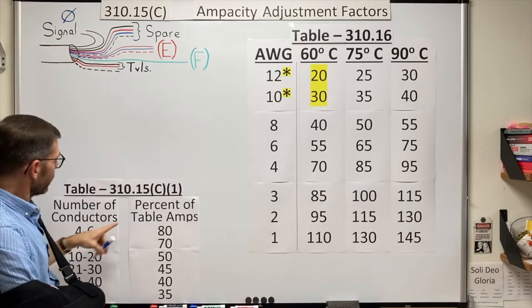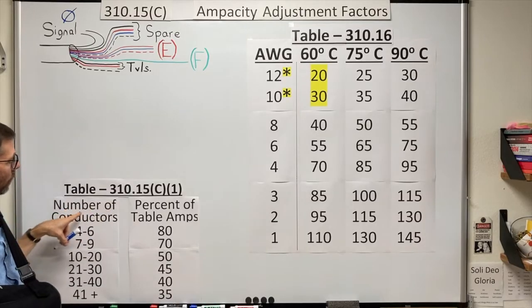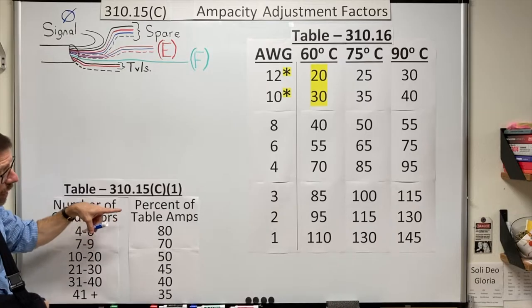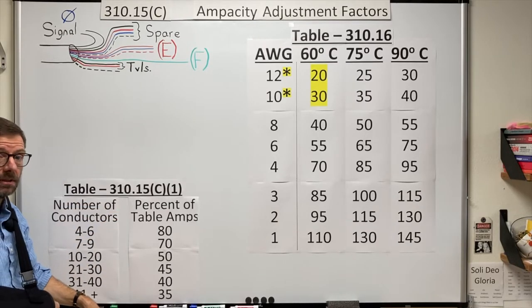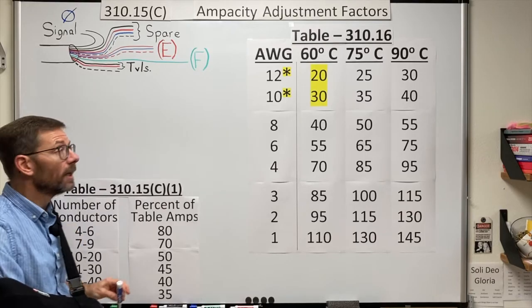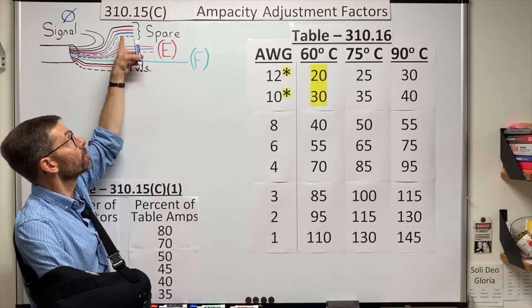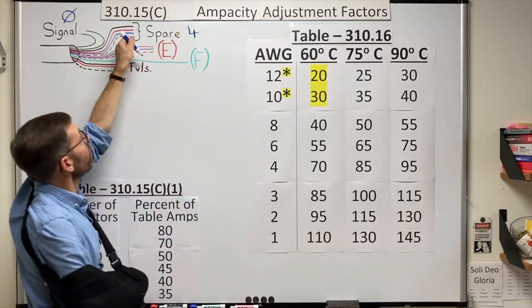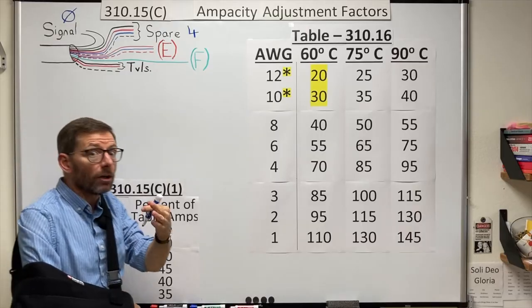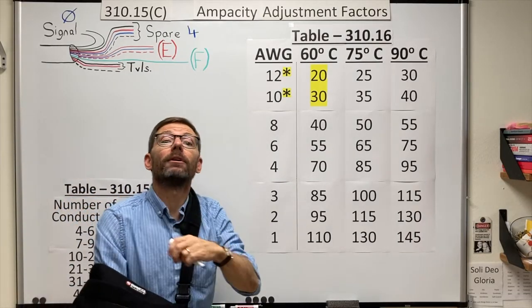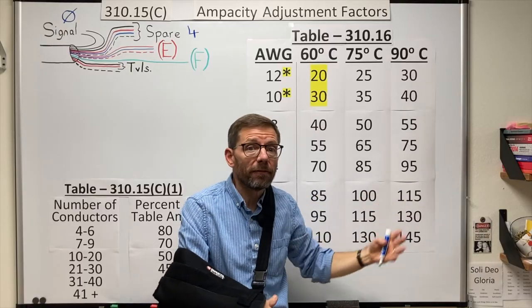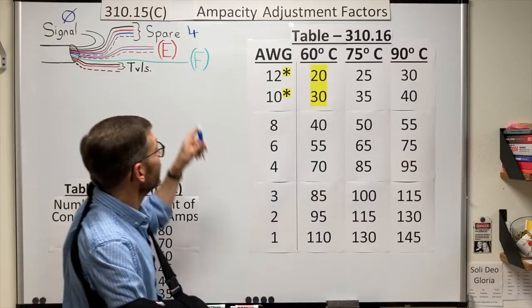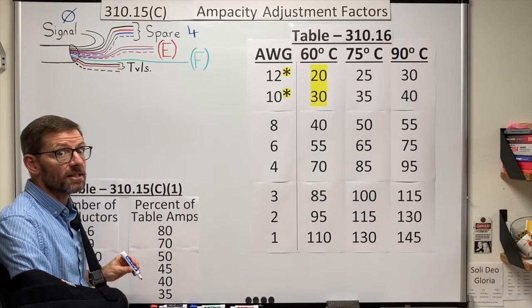Zero wires. However, there is an asterisk right beside the number of conductors on the table, and it refers to three sentences written below the table. The first sentence there tells me that if I have spare wires, I need to count all of them. So here I have four spare wires. I'm not using them now. They're not adding heat now. But when we do connect them in the future, I don't know what configuration they'll be used in, but they will start adding heat then. So I need to account for them in this stage of the process.